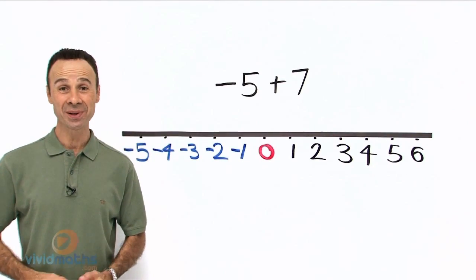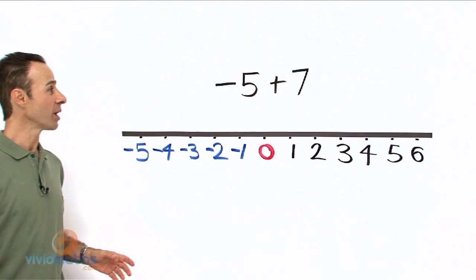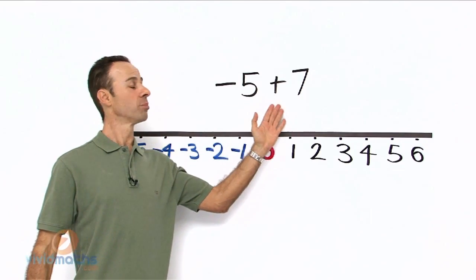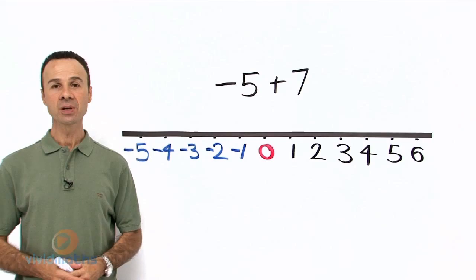Ok, let us do a directed numbers lesson. Over here we have an example: minus 5 plus 7. So there are two steps to this.